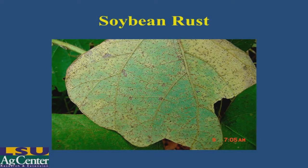These are the symptoms on the bottom of lower leaves of kudzu. You can see the tiny areas of brown — inside each of those areas of brown are multiple pustules that are volcano-like, as was mentioned before.